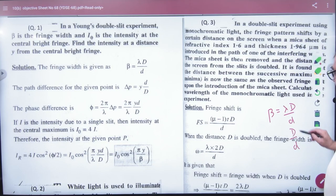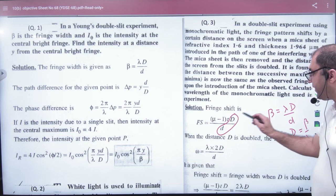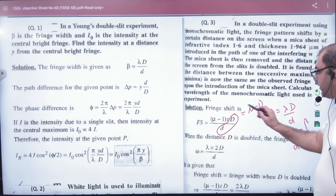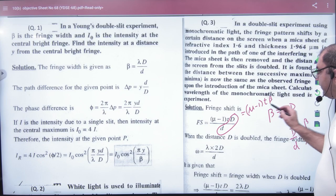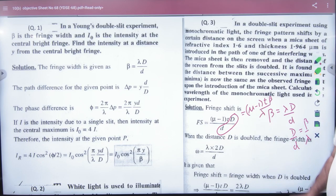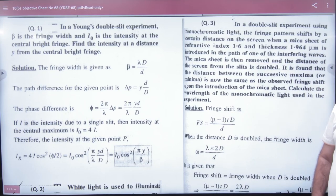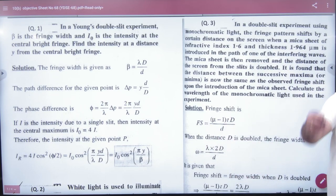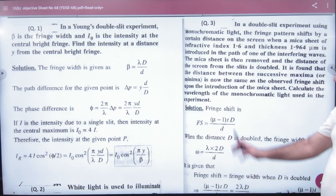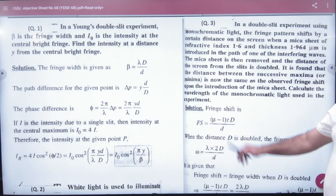We have done the formula. Beta is λD by d, so what is D by d ratio? Beta by λ. So here D by d is beta by λ. So what will happen? (μ-1)t beta by λ. We have not done the formula, but I have checked in the books. We have used this formula, so note in the book the formula. The fringe shift formula is this: (μ-1)t D by d.